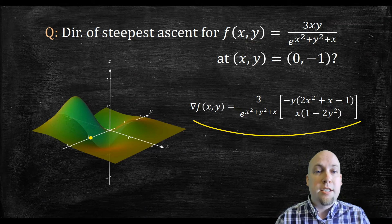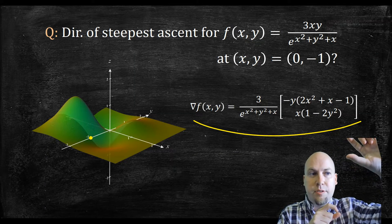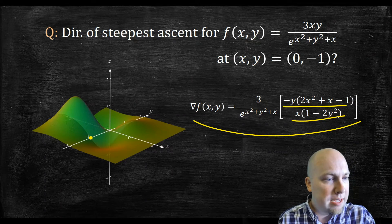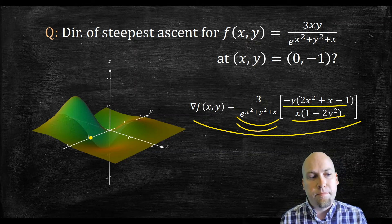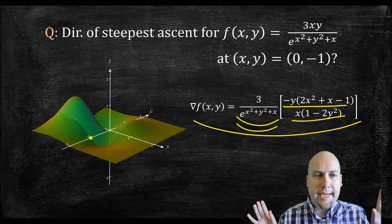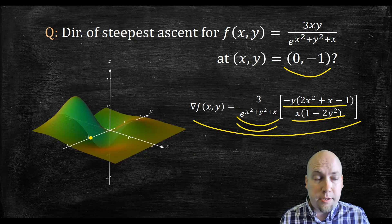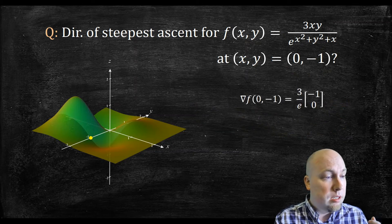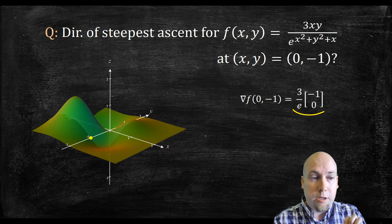If you forget how to find gradients, go back to the previous lecture. Remember, all you do is find the two partial derivatives — the partial derivative in the x direction and in the y direction — and those are the two entries of the gradient vector. They each have a common factor out in front, so I've pulled that common factor outside the vector. That's our gradient for a general x and y. Now I only need the gradient at (0, -1), so I plug in x equals 0 and y equals minus 1. The gradient simplifies down to 3 over e times the vector (-1, 0).